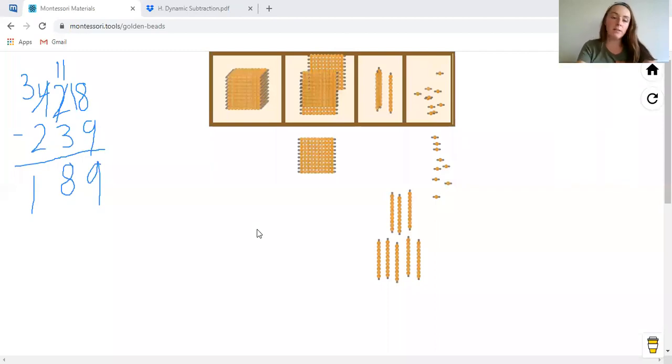So these golden beads work the same way as they do at school. I just kind of wanted to give a review for those of you at home that are maybe struggling a little bit with math and that way mom and dad can see how this works too. So our answer is 189. We have 100 square, eight tens, and then nine units.